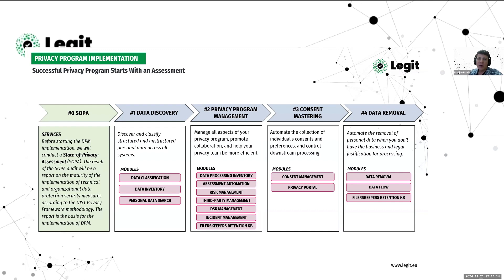Then we would show all the capabilities of privacy program management: automation of records of processing activities, risk assessments, third-party management, data subject request management, and so on. We would also speak about managing consents and preferences — covering marketing activities, omnichannel communication, analytics, and customer profiling — providing one central source of truth for end-to-end automation of consent management and collecting consents from individuals.